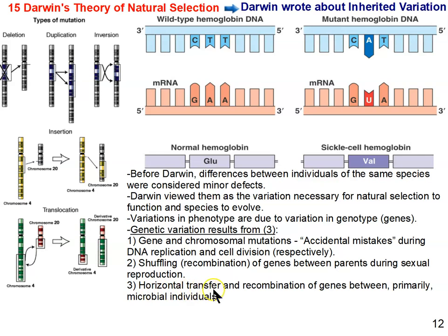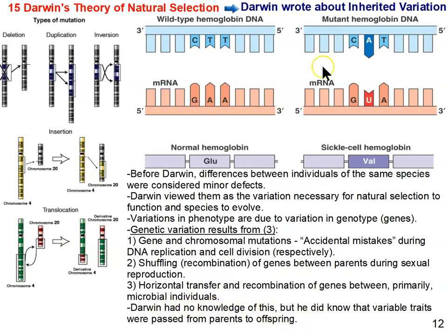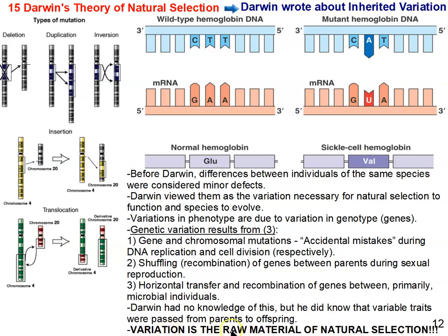Thirdly, there's horizontal transfer, where genes can be transferred from one organism to another. This was first discovered and primarily happens in microbial individuals, mainly bacteria. However, we are finding that even multicellular organisms have some horizontal transfer. Darwin had no idea about genes or chromosomes, or where the variation he observed came from — but he did know that variations were passed from parents to offspring, that it was all about heritable variation. And variation, as I want to stress, is the raw material of natural selection and evolution.